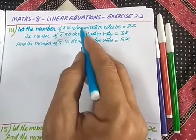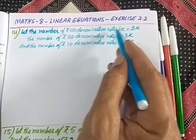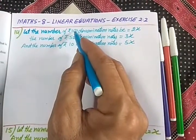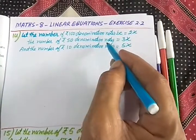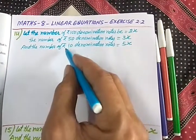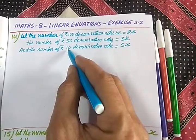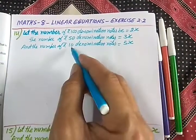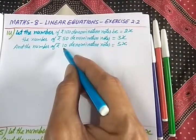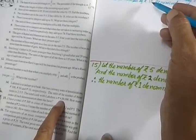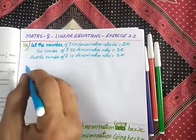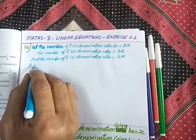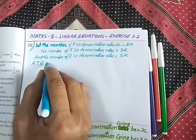Now let's calculate their values. The value of the ₹100 denomination notes will come out to be 2x into 100. Similarly, the value of ₹50 denomination notes will come out to be 3x into 50, and the value of ₹10 denomination notes will come out to be 5x into 10. The total value is given as 4 lakh, so the values of these three added together will equal 4 lakh.